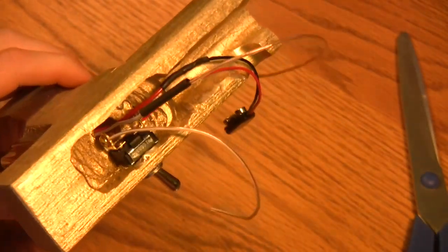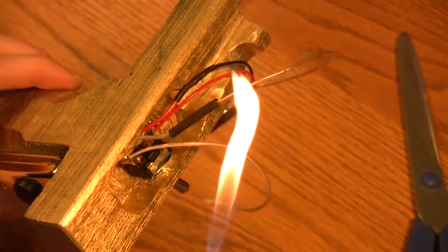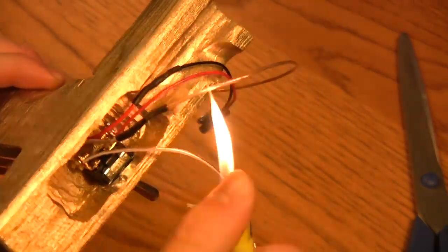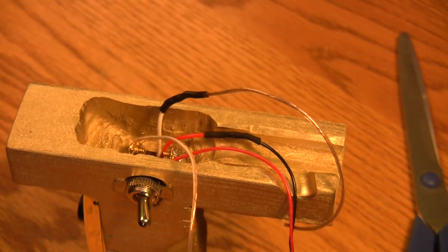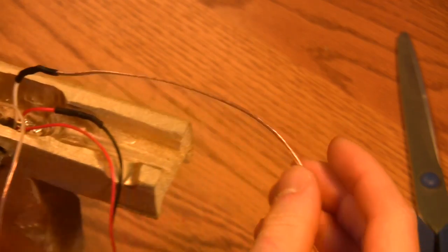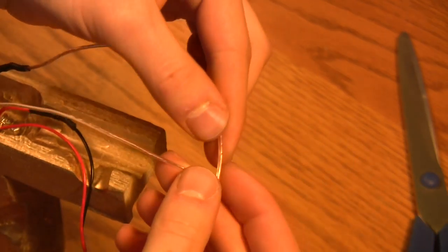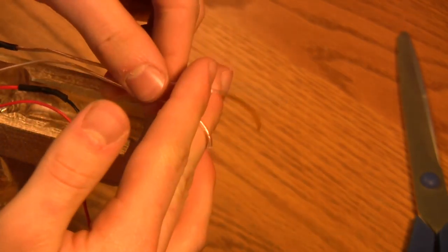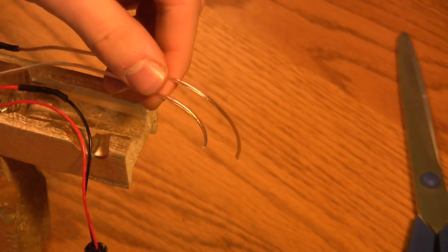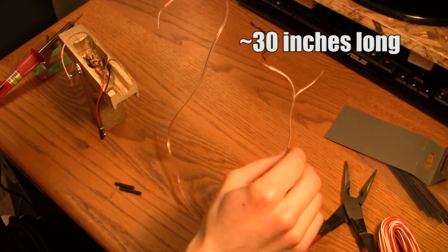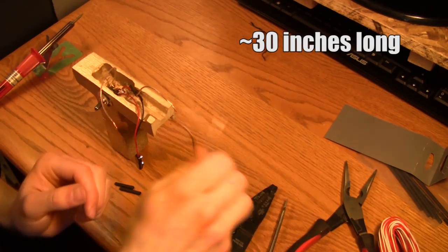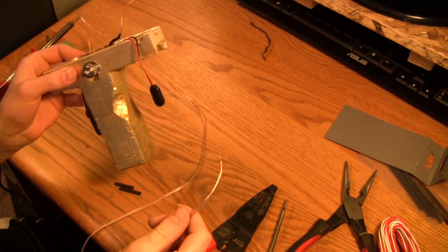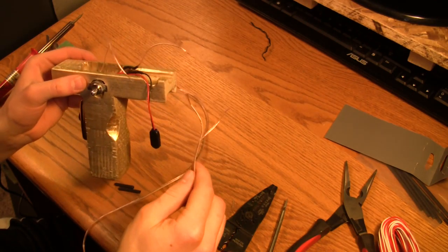And now we can heat up the shrinking tube stuff with my awesome crazy lighter. That is basically your pistol grip. Now we have to solder these two wires to some longer wires that will be going all the way to the back of the launcher. So let's do that quick.